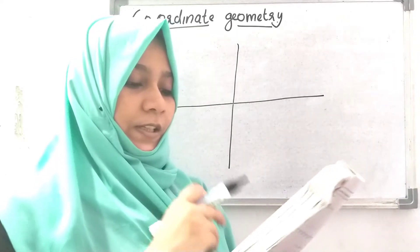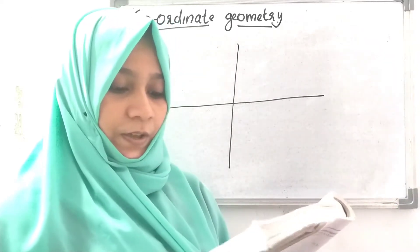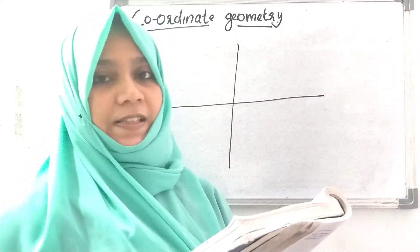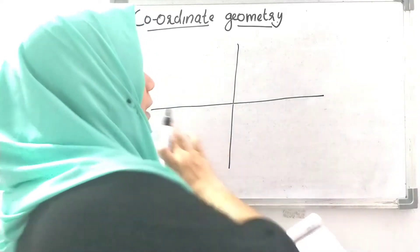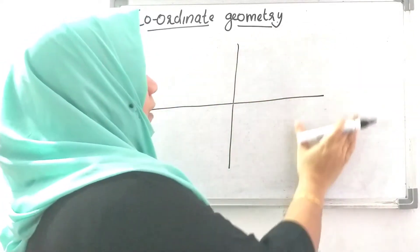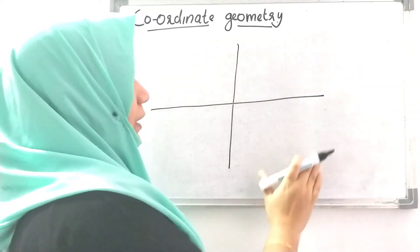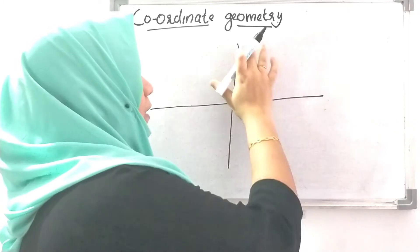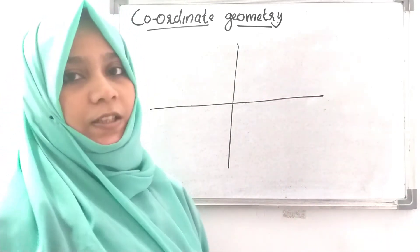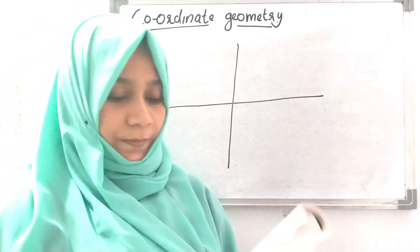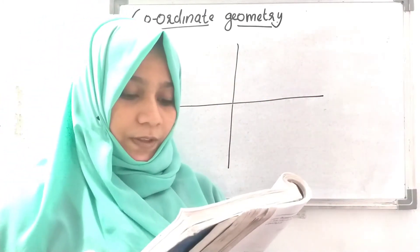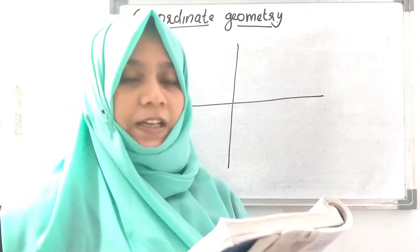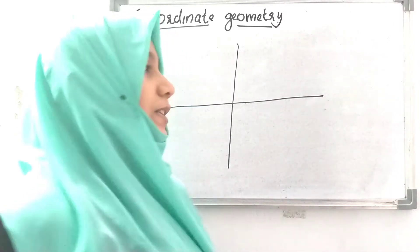The plane is called the Cartesian plane and the lines are called the coordinate axes. The horizontal line is called the x-axis and the vertical line is called the y-axis.